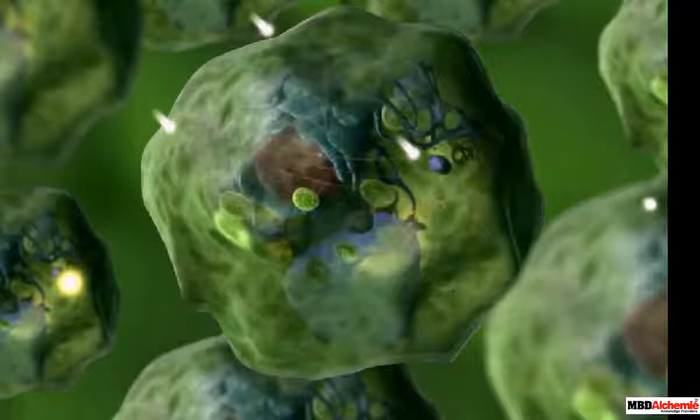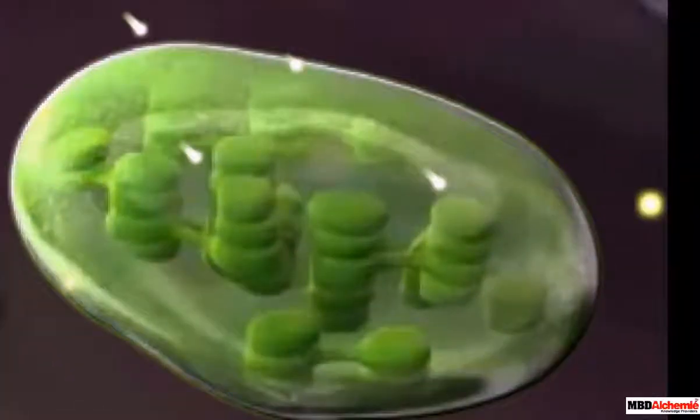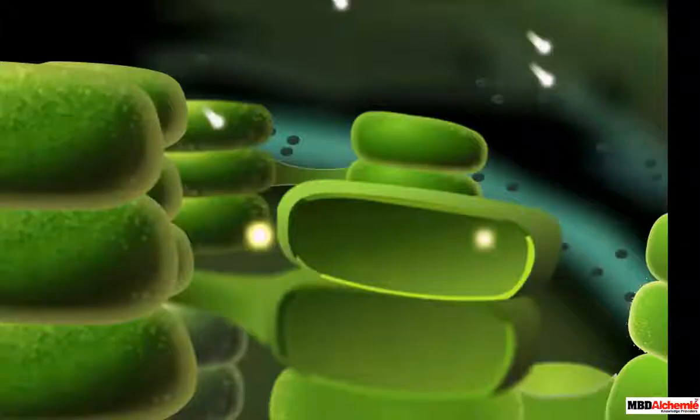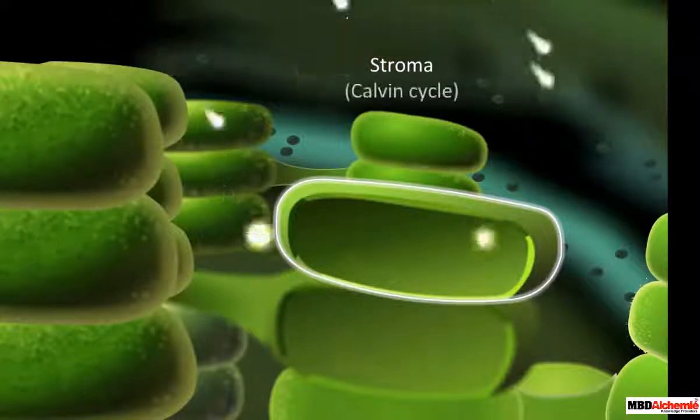Within the chloroplast, small disc-like structures called thylakoids are present which are surrounded by a fluid-filled space called the stroma. The reactions that synthesize glucose, the Calvin cycle, occur in the stroma.